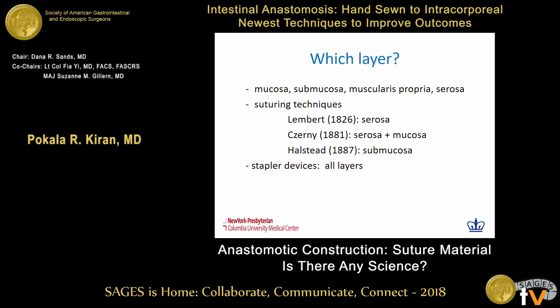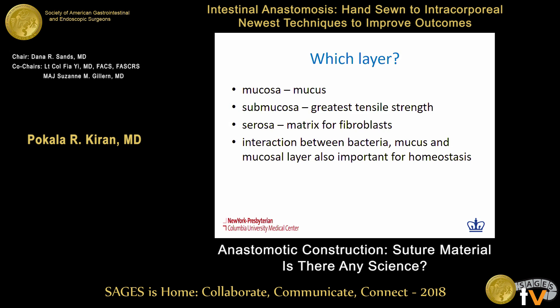With the advent of staplers, which are almost ubiquitous and incorporate the entire bowel wall, healing from stapling is almost comparable to hand-sewn anastomosis in most instances. Thus, it seems that all the layers of the bowel wall are important in terms of healing. The mucosa produces mucus acting as a barrier early in healing; the submucosa has greater tensile strength; the serosa is a good matrix for fibroblasts and healing; and the interaction between these various layers is also important.